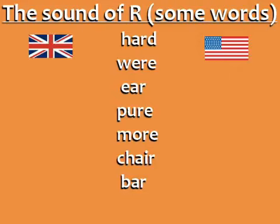The R is pronounced stronger in American English. Listen to the difference: hard, hard; were, were; ear, ear; pure, pure; more, more; chair, chair; bar, bar.